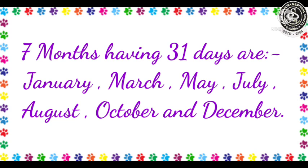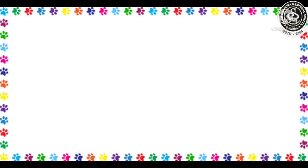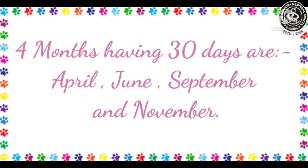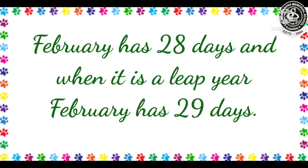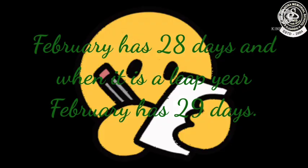Seven months having 31 days are January, March, May, July, August, October, and December. Months having 30 days are April, June, September, and November. And February has 28 days, and when it is a leap year, February has 29 days.